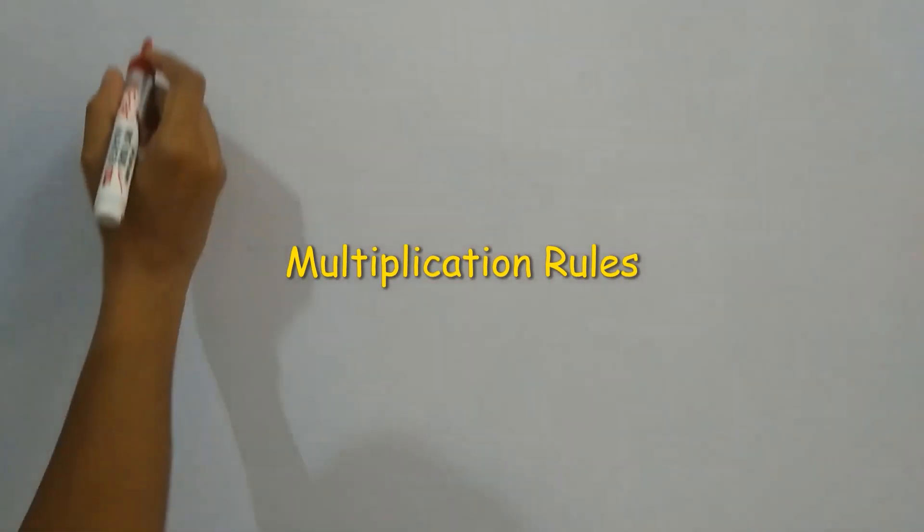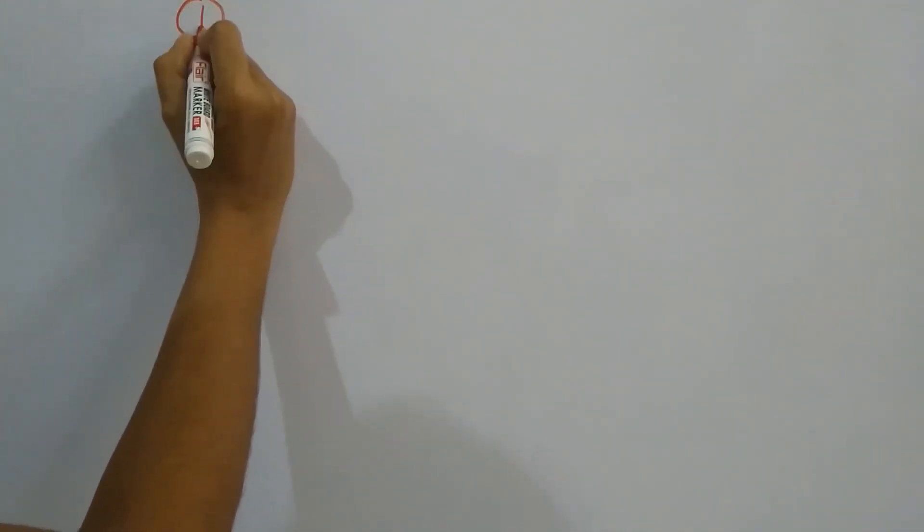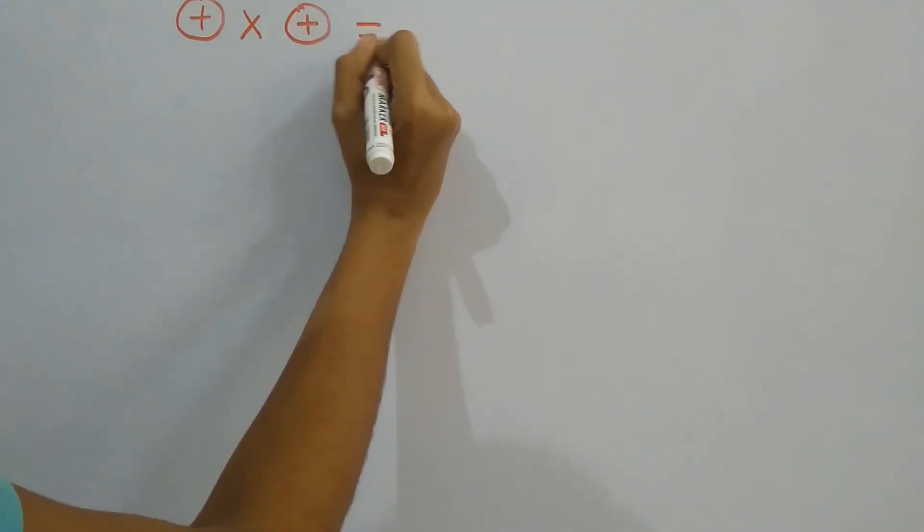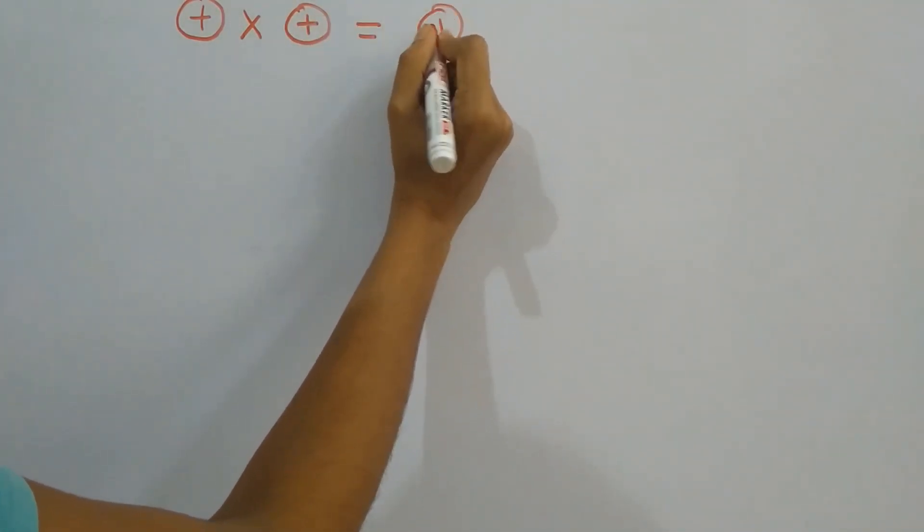Today I am explaining multiplication rules. When both numbers are positive, then the product will be a positive number.